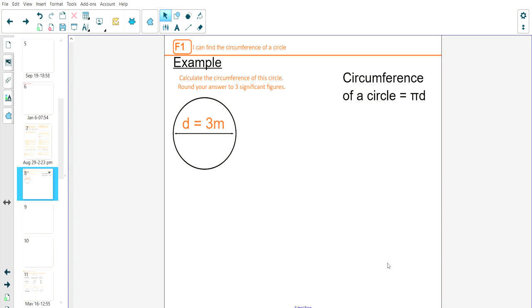We're going to be doing an example on finding the circumference of a circle. The example below is: calculate circumference of the circle, round your answer to three significant figures.